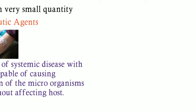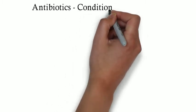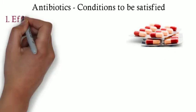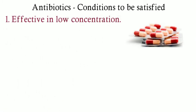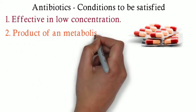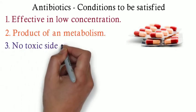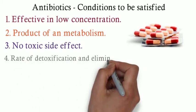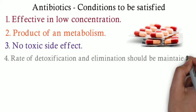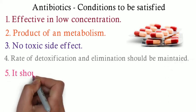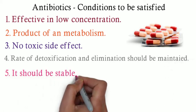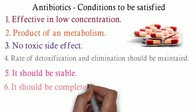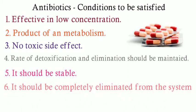For a drug to be considered an antibiotic, there are six conditions to be satisfied. First, it should be effective in low concentration. Second, it should be a product of metabolism. Third, there should be no toxic side effects. Fourth, the rate of detoxification and elimination should be maintained. Fifth, it should be stable. Sixth, it should be completely eliminated from the system after withdrawal of the drug.